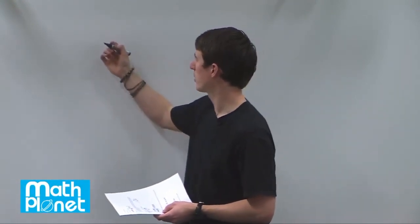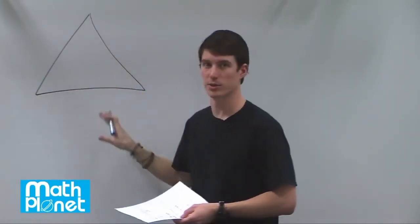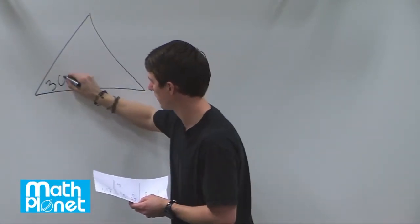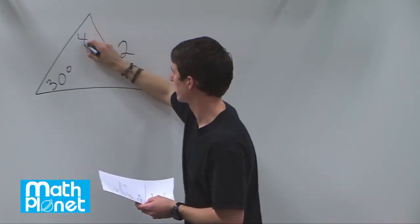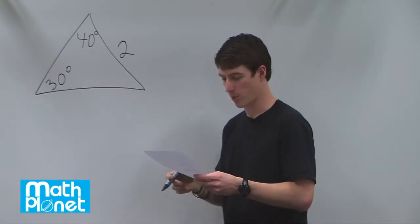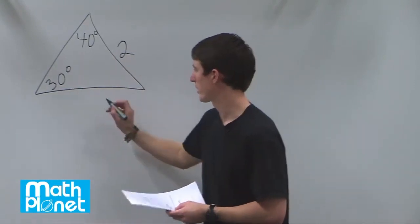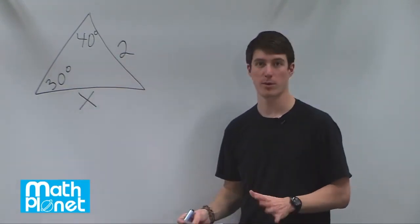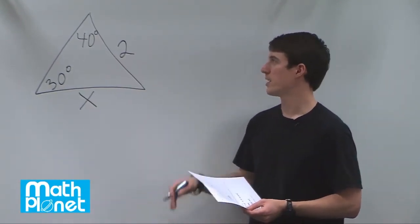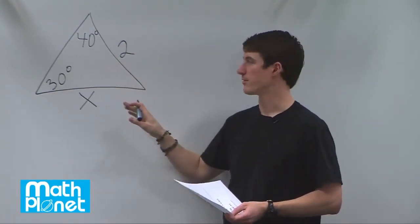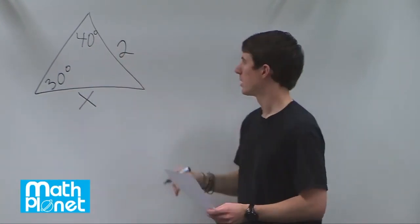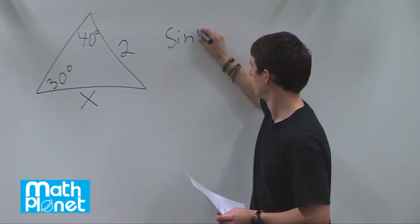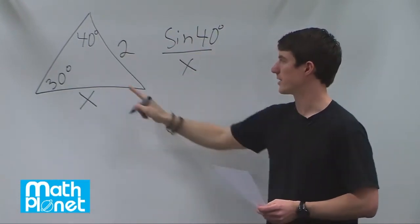Here we have a trigonometric problem where we need to solve for the length of another side in a triangle. We're given one angle of 30 degrees with an opposite side of length 2, and another angle of 40 degrees. We need to find the side opposite the 40-degree angle, which we'll call x. To do that, we use the law of sines: sine of 40 degrees over x equals sine of 30 over 2.